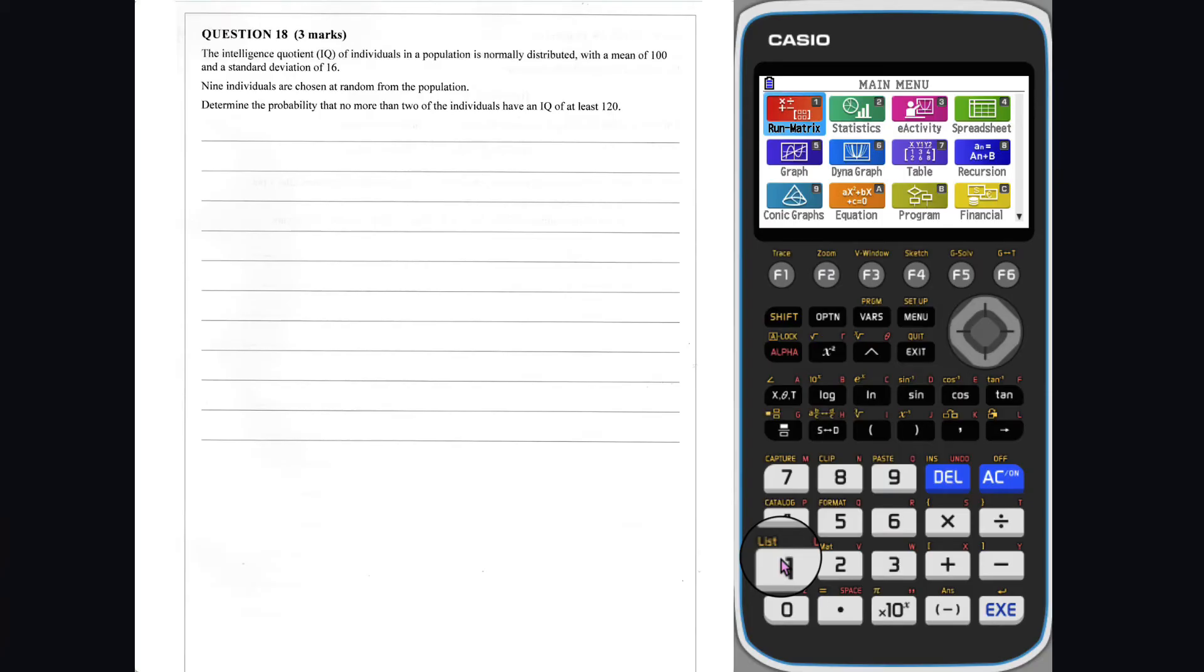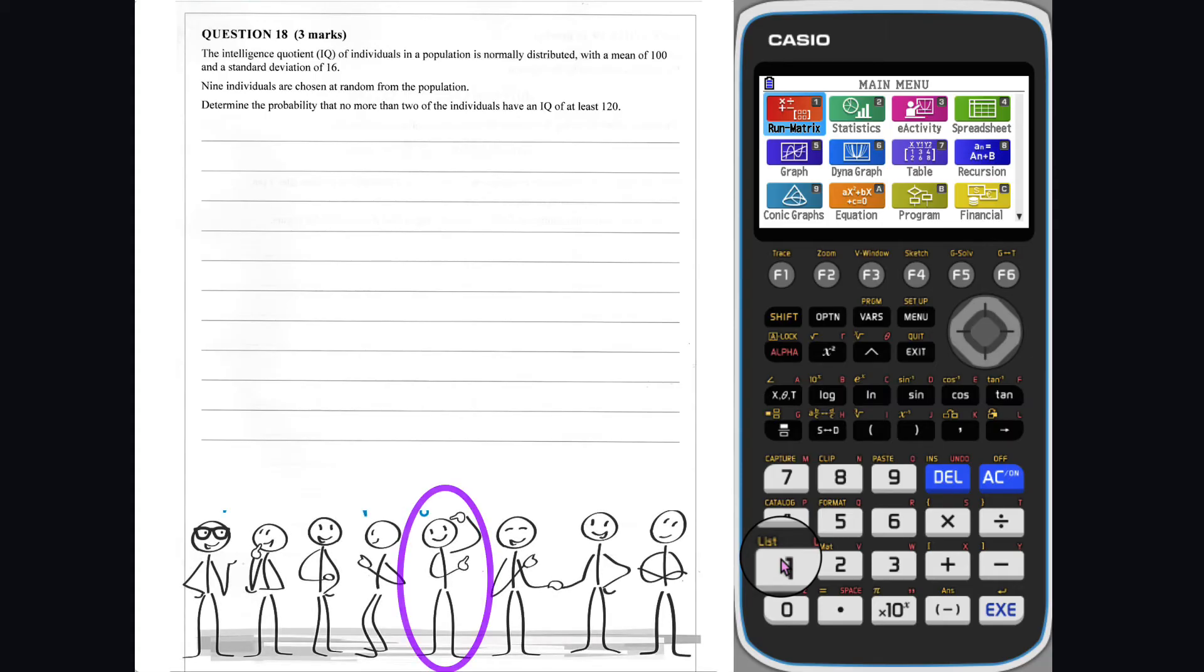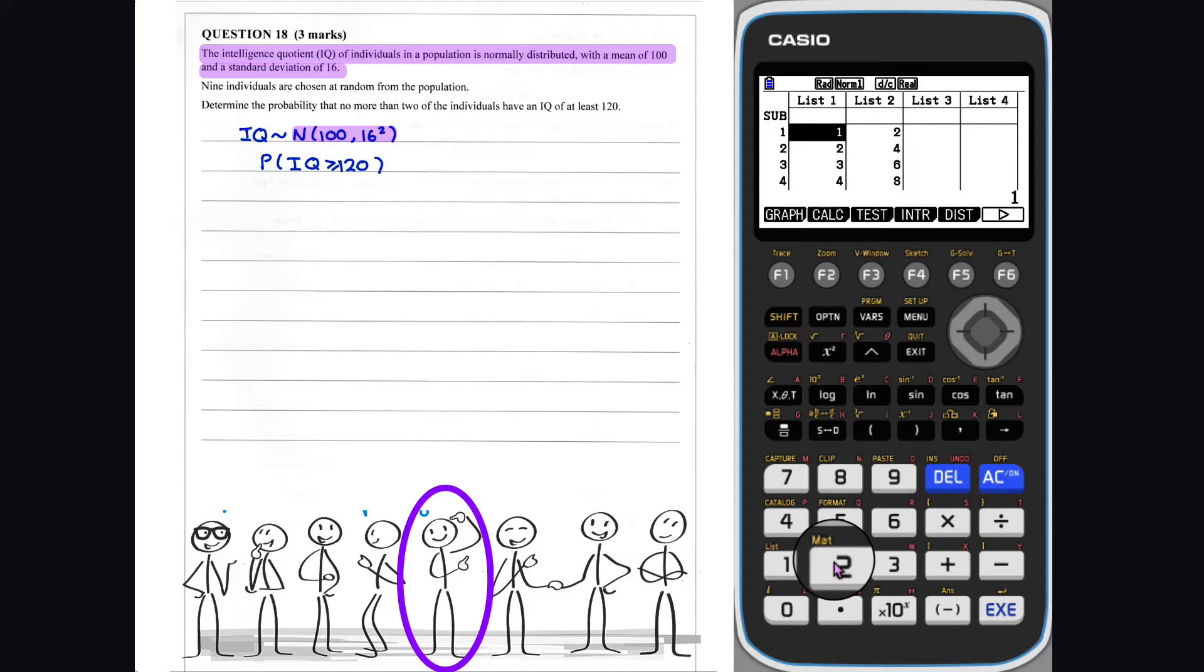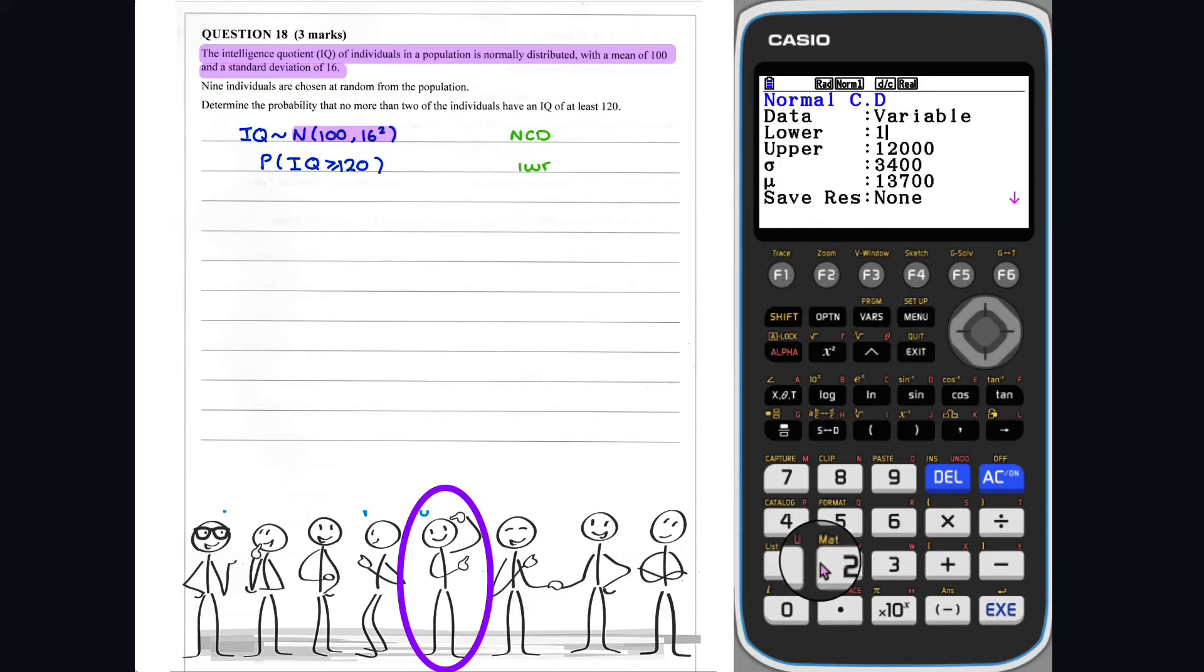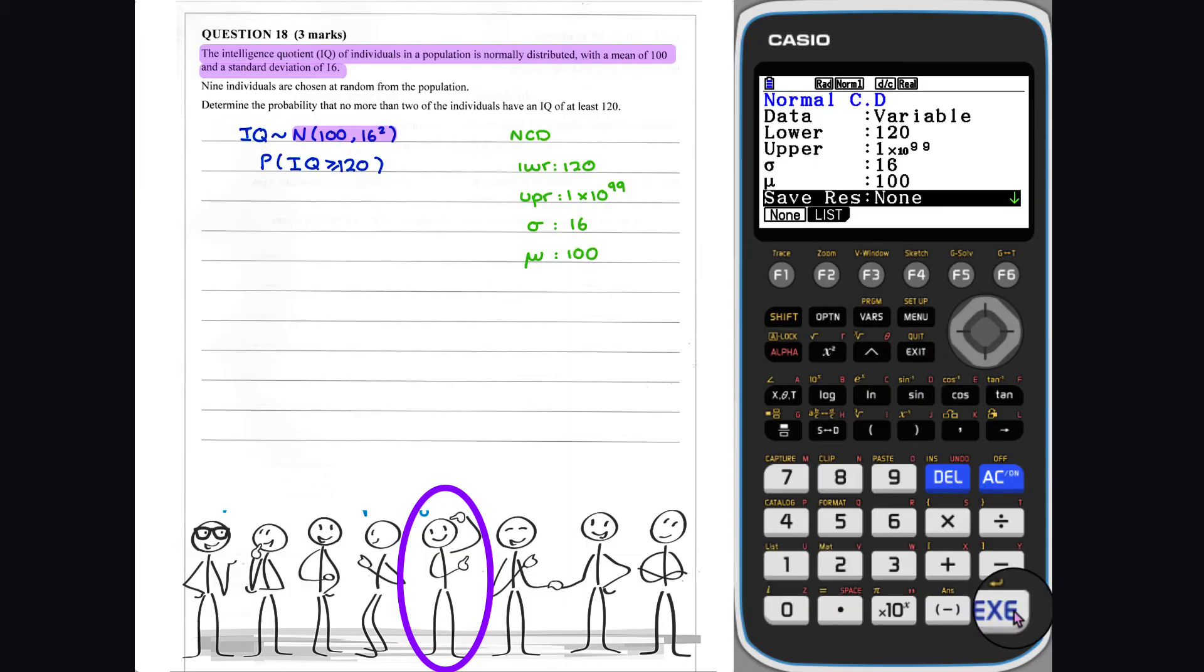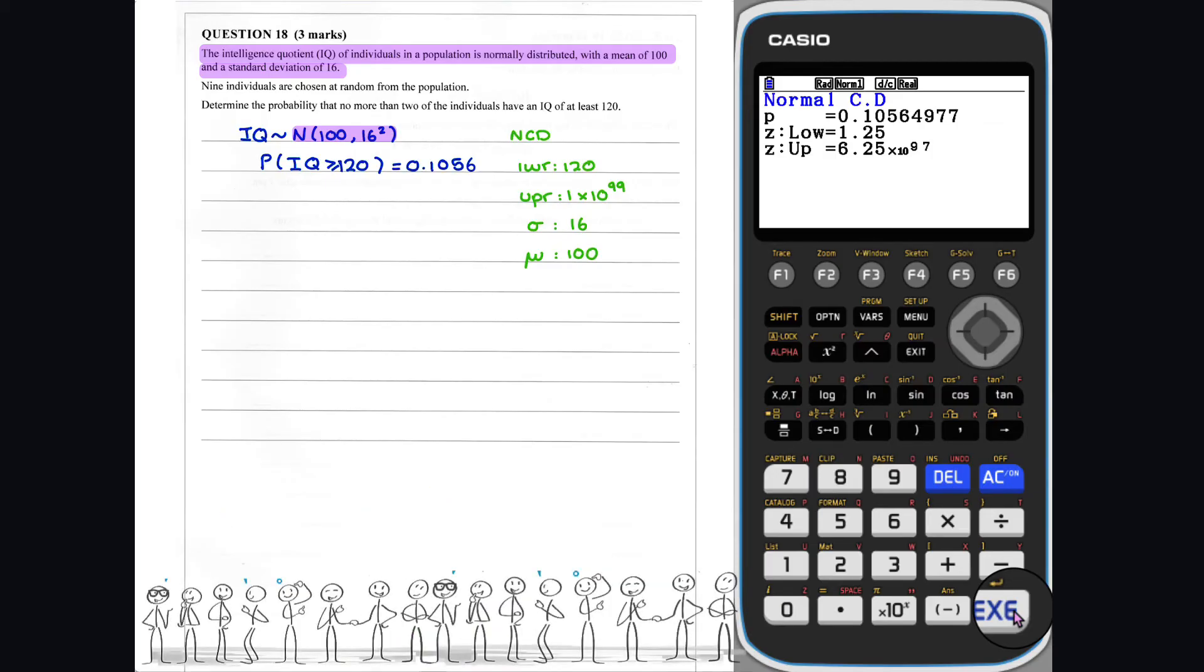Question 18. First, we want to find the probability that one randomly selected individual has an IQ of at least 120. The IQ of individuals is normally distributed with a mean of 100 and a standard deviation of 16. So we can evaluate the probability by using the NCD mode in the statistics app.